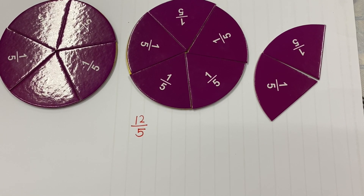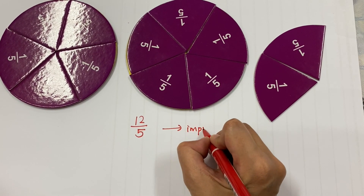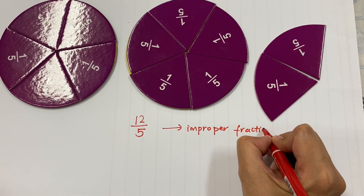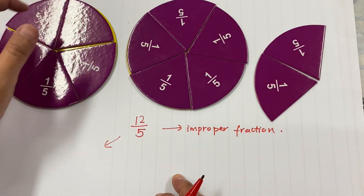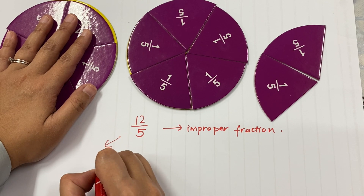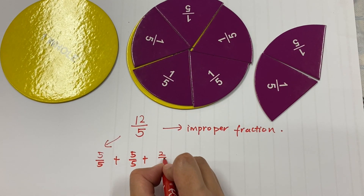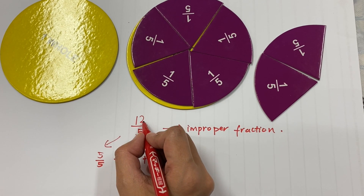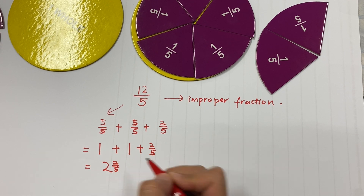Let's look at another example. Given the improper fraction 12 out of 5 — changing it to a mixed number. This 12 is broken up into: 5 out of 5, plus another 5 out of 5, plus 2 out of 5. So 5 plus 5 is 10, and 10 plus 2 gives you 12. So 5 out of 5 is one whole, plus another one whole, plus 2 fifths. Your mixed number is 2 whole and 2 fifths.